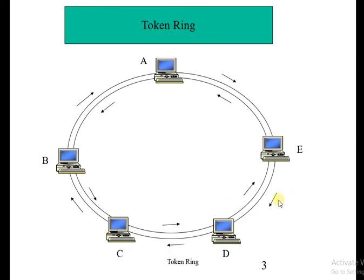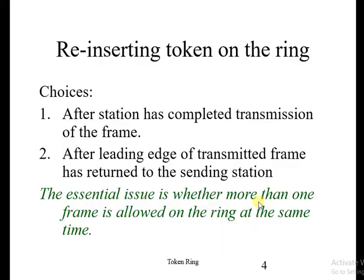Only this anti-clockwise path is allowed in this figure. For example, if B sends a token to E, then B executes this anti-clockwise path, not the clockwise path. After one token transmission is complete, a new token is inserted — this is called reinserting the token on the ring.